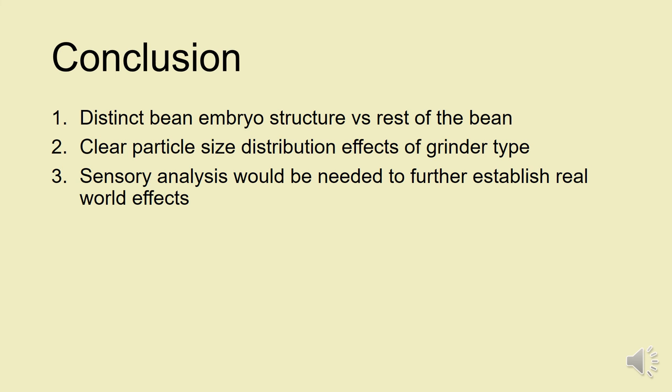So in conclusion, we clearly saw that there was a distinct difference in the embryo structure versus the rest of the bean. However, this structural difference was not enough to elicit the bimodal nature of coffee grinds. And then next is that particle size distribution clearly comes or is clearly affected by the grinder type. We clearly saw it in the conical versus the flat burr. The conical burr clearly yielded a more pronounced fines peak as compared to the flat burr grinder.